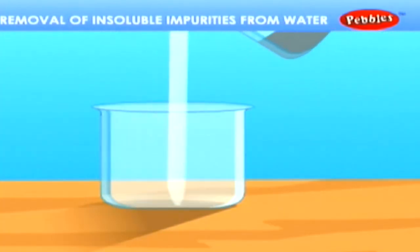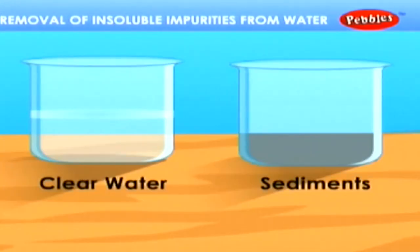The clear water can be seen at the top. The sediments can be removed from the water by gradually pouring the clear water into another container without disturbing the sediments at the bottom.